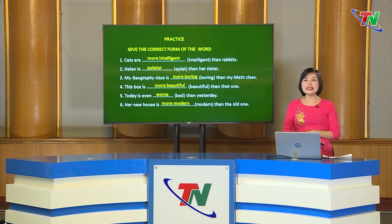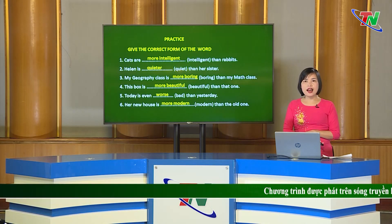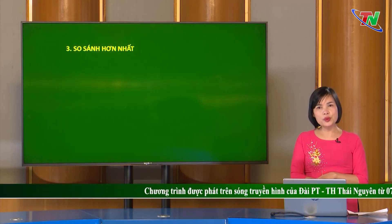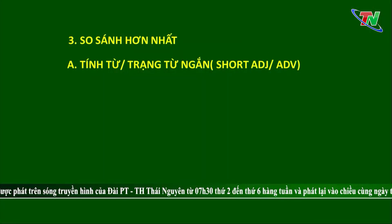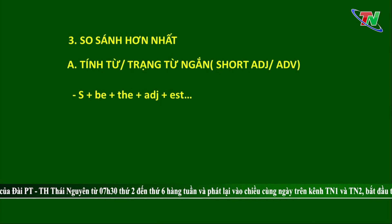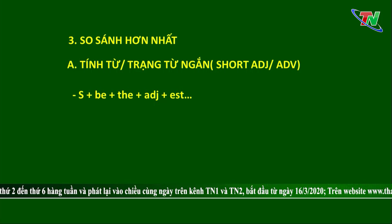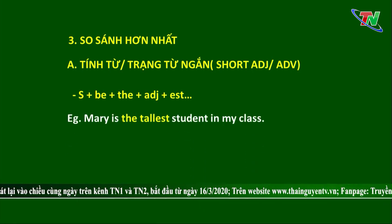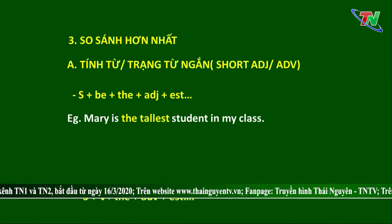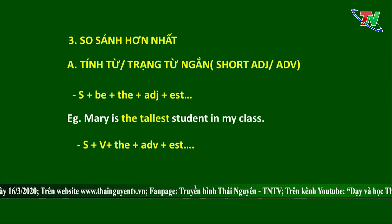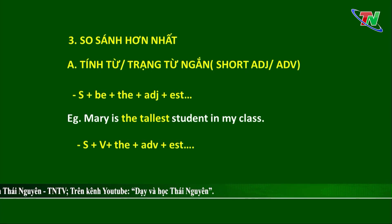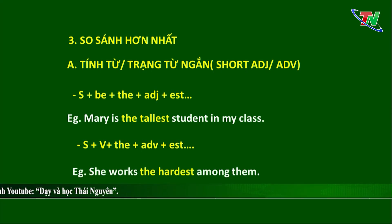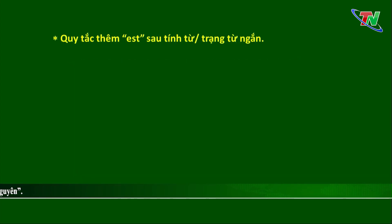Chúng ta vừa mới phân biệt được đâu là tính từ và trạng từ ngắn, đâu là tính từ và trạng từ dài, và các tính từ trạng từ đặc biệt. Chúng ta sẽ sang phần tiếp theo: so sánh hơn nhất của tính từ và trạng từ. Cũng như so sánh hơn, trong so sánh hơn nhất, chúng ta đi lần lượt bắt đầu từ tính từ và trạng từ ngắn. Cấu trúc với tính từ ngắn: Chủ ngữ + be + the + tính từ + EST. Ví dụ: Mary is the tallest student in my class. Với trạng từ: Chủ ngữ + động từ + the + trạng từ + EST. Ví dụ: She works the hardest among them.